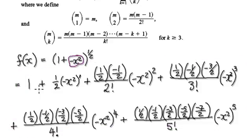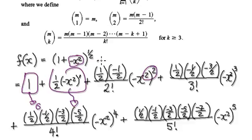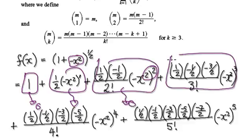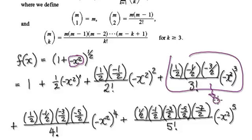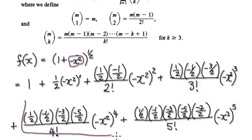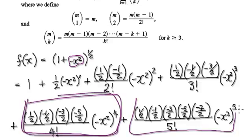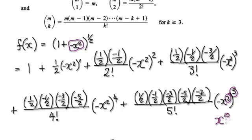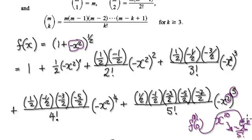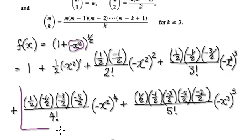Now differentiate it eight times. When you differentiate this series eight times, the constant term goes to zero, the x term goes to zero, the x-to-the-fourth term goes to zero after evaluating at zero, and the x-to-the-sixth term also goes to zero. The only block of interest is the one containing x to the power of eight — differentiating higher-power terms and evaluating at zero also gives zero.